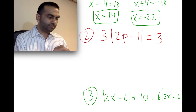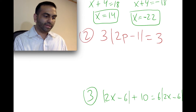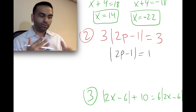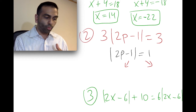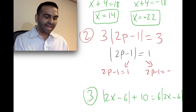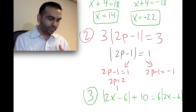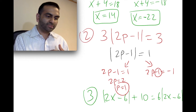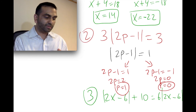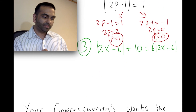Let's do another example problem. First, let's isolate the absolute value by itself — divide both sides by three. So we get the absolute value of 2p minus 1 equals 1. Now we split this into two equations: 2p minus 1 equals 1, and 2p minus 1 equals negative 1. Solving the first by adding 1 to both sides gives 2p equals 2, so p equals 1. For the second, adding 1 to both sides gives 2p equals 0, so p equals 0. Those are our two answers, and you can plug them back in to verify.